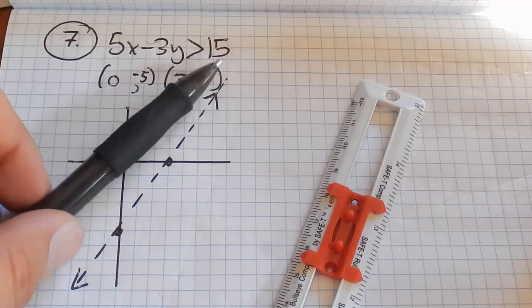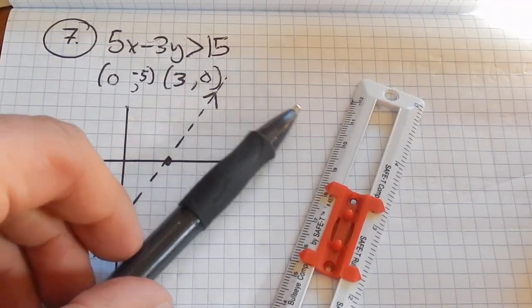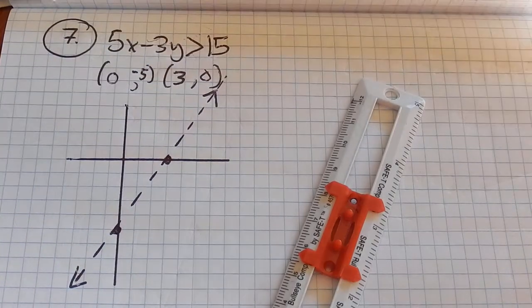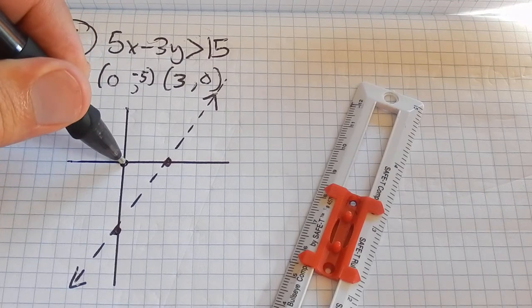So now it becomes, what side do I shade? It's either all these points above this line that make this true or all these points below this dashed line that make this true. How I'm going to figure it out is I'm just going to test a point and see if it works. So I'm going to test (0, 0).